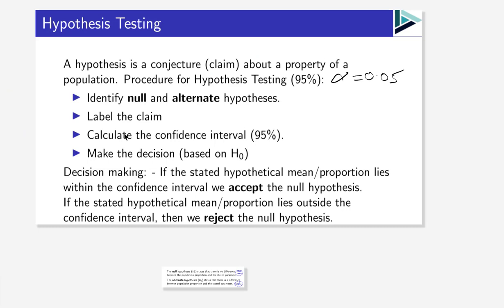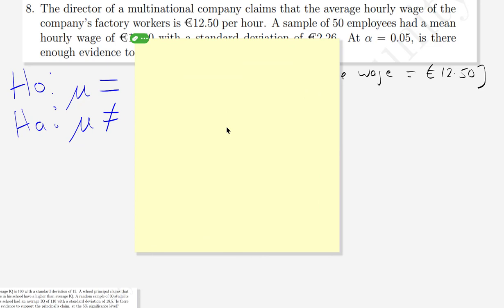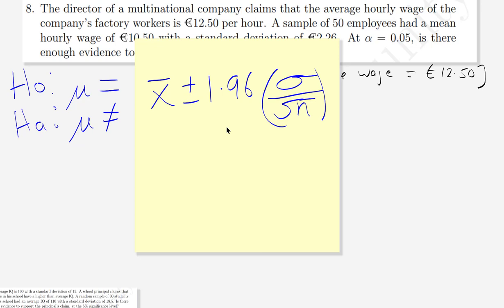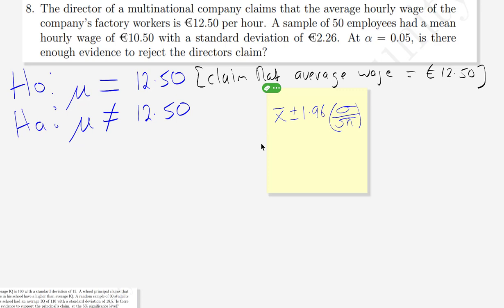The next step is to calculate the 95% confidence interval. We have a formula for the confidence interval for a mean: x-bar plus or minus 1.96 times the standard error, where the standard error is sigma over the square root of n. We'll use that formula right here to get the confidence interval.